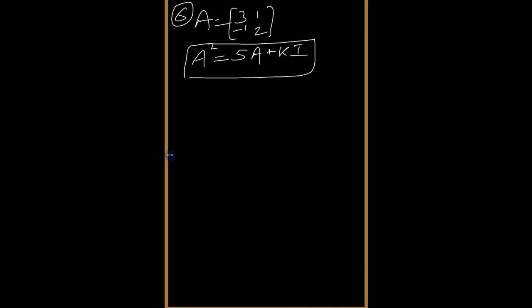In this question it is given that a matrix A, and we have to find the value of k such that A² = 5A + kI. The first thing we have to do is compute A². We will multiply matrix A by itself: [3, 1; -1, 2].